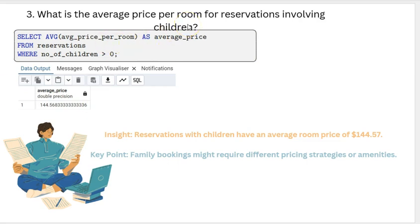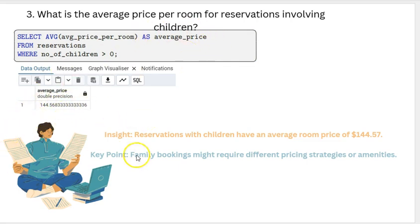What is the average price per room for reservations involving children? The average price per room involving children is $144.5. The key point here is that family bookings might require different pricing strategies and amenities.